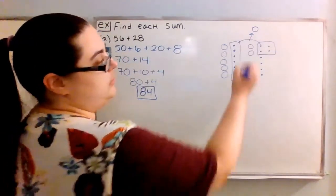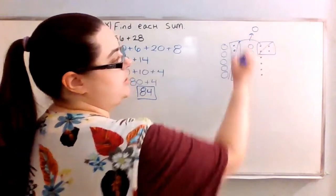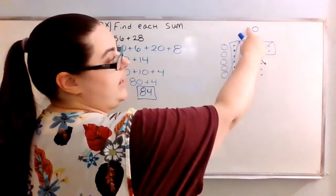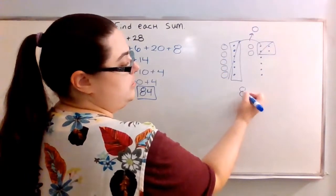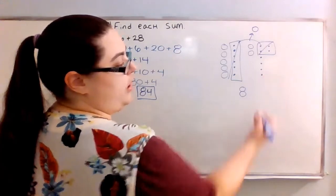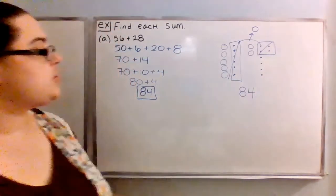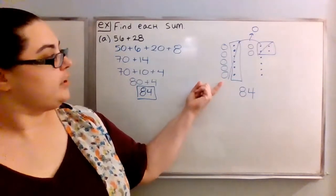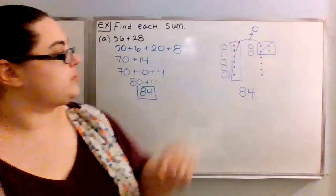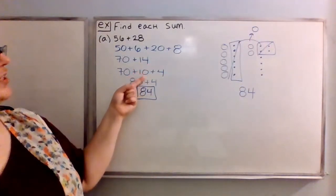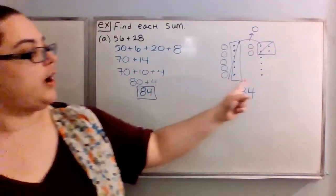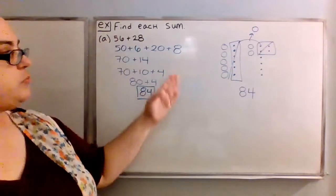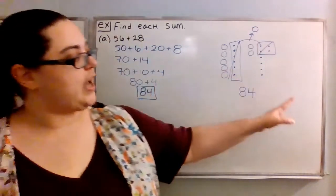So I cross those out because these have turned into a circle since there were 10 of them. Now I have eight circles and four dots. So we end up getting 84 the same way. Really what's going on visually is these 10 turning into a circle is us breaking this 10 of 14 away and leaving the four dots. That's the connection between what's going on numerically and what's happening in the picture.